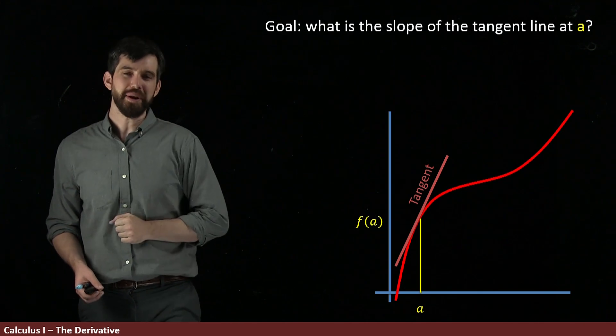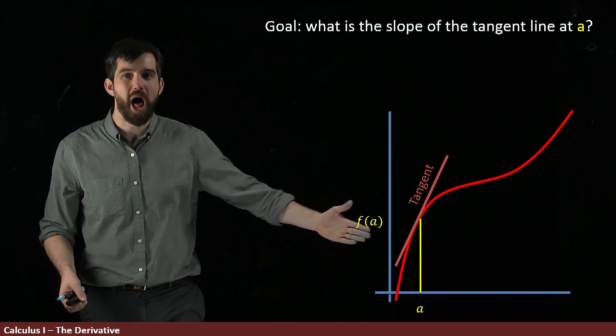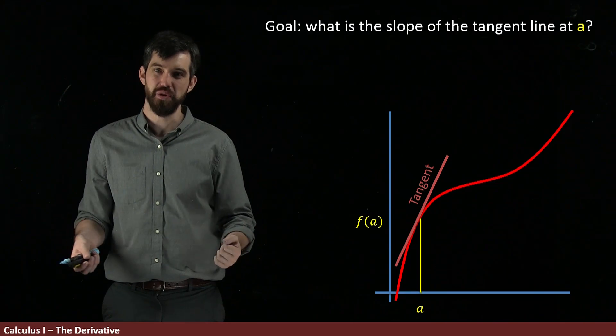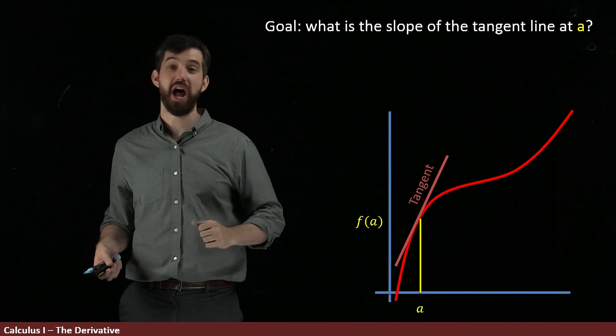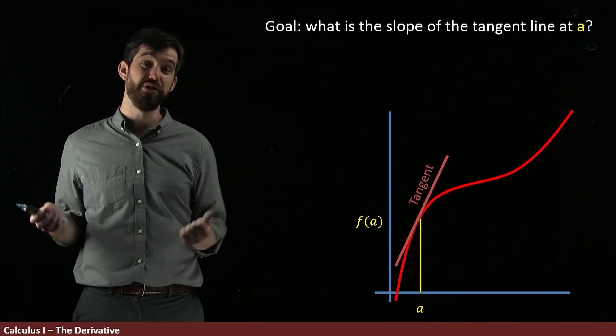Okay, so how are we going to be able to compute this? This is some line I haven't even really well defined it for you, but my goal is to figure out what is the slope of that line or more broadly what's the equation of that line.